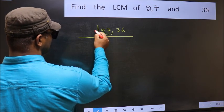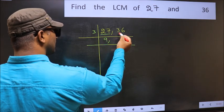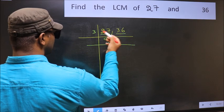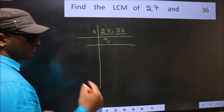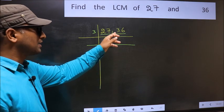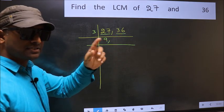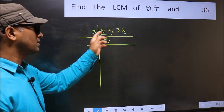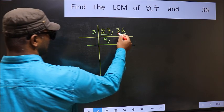27 is 3 nines, 27. The other number is 36. To check whether 36 is divisible by 3 or not, add the digits: 3 plus 6. We get 9, and 9 is divisible by 3, so this number is also divisible by 3. First number: 3.